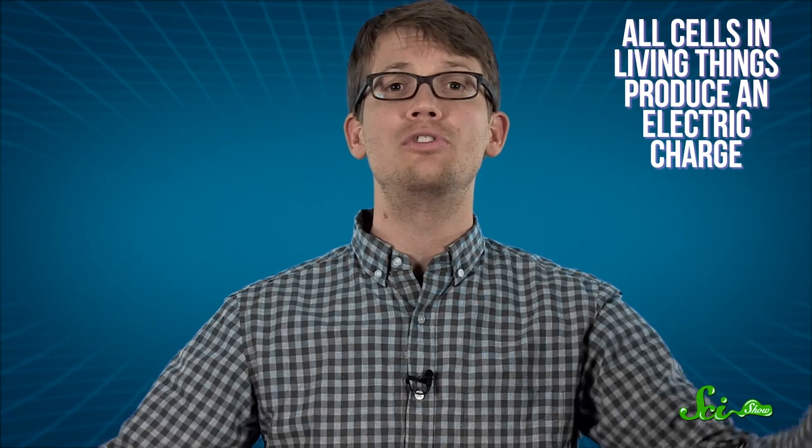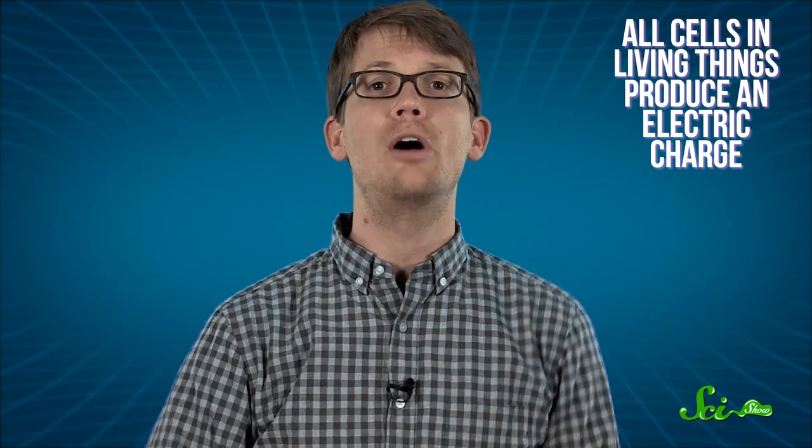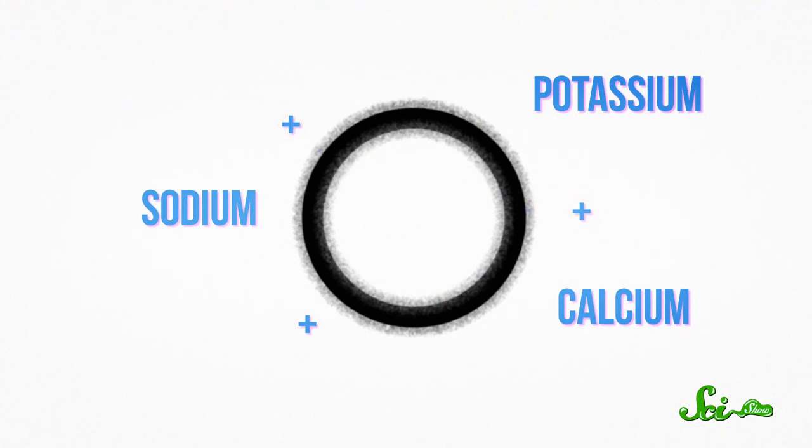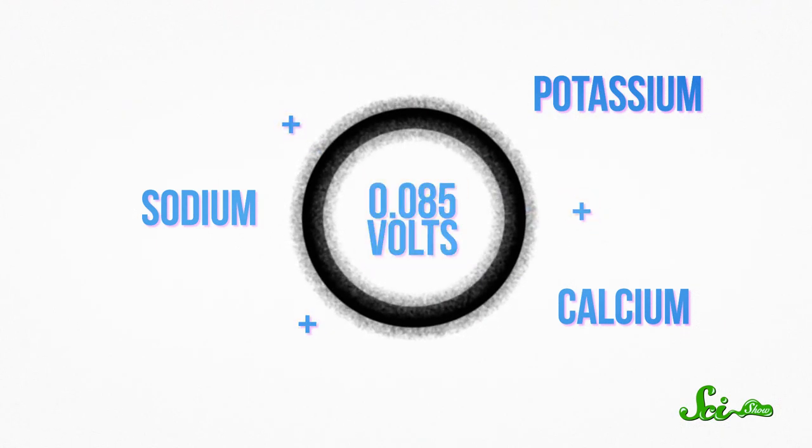All cells in living things produce an electric charge. It's a normal part of cell biology. They do this by pumping positive ions of metals like sodium, potassium, and calcium outside the cell membrane. So the outside of your cells is slightly positive compared to the insides. Every cell in your body has a resting voltage of about 0.085 volts.